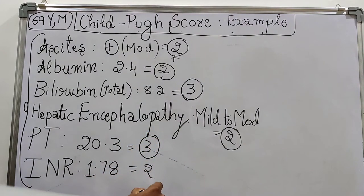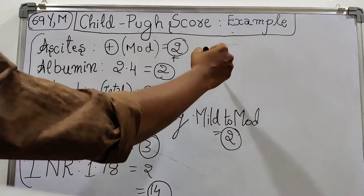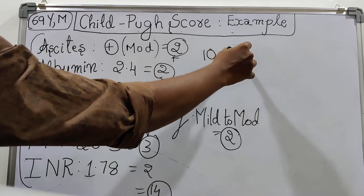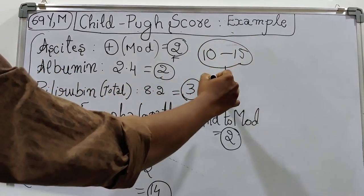So as per Child-Pugh criteria, if the score is 10 to 15 in range, the patient comes under Child-Pugh class C.